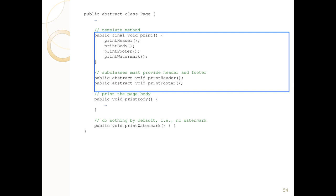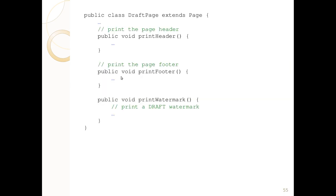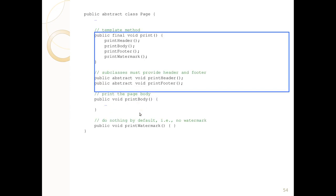So, the template method: you write down an algorithm in the abstract. You take primitive operations, mark them abstract, and suggest that implementers implement those — fill them in and extend your original template method algorithm. The idea is you're providing a framework where subclasses can specialize the behavior that you've already laid out in your template method.